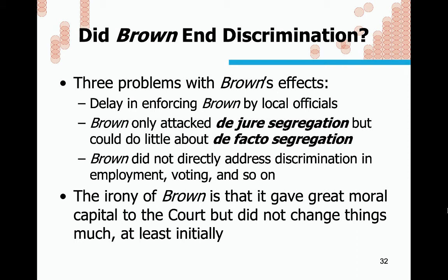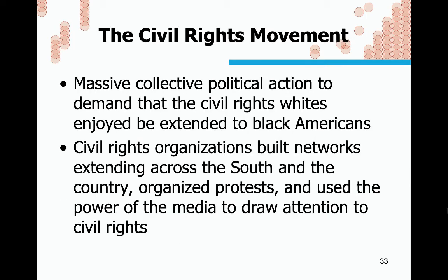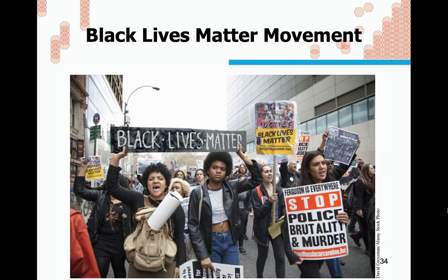A problem with Brown's effects was a delay in enforcing it by local officials — a classic example of the problem of federalism, where a federal court says you can't do this and state and local governments say 'try me.' Brown only attacked de jure segregation (legal segregation) but could do little about de facto segregation (segregation in practice). Brown did not directly address discrimination in employment, voting, and so on. But it really was the start of a beneficial trend and gave great moral capital to the Supreme Court, kicking off the civil rights movement.